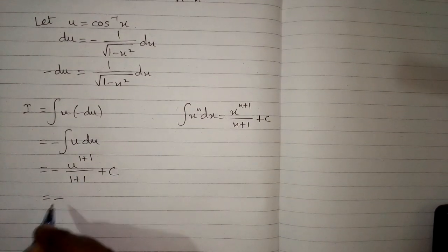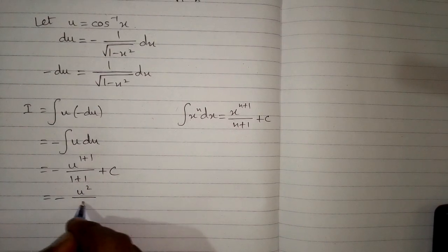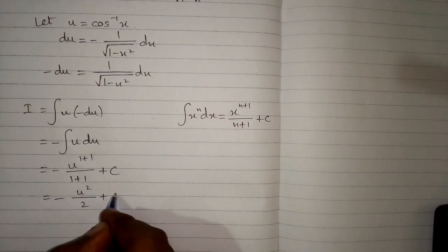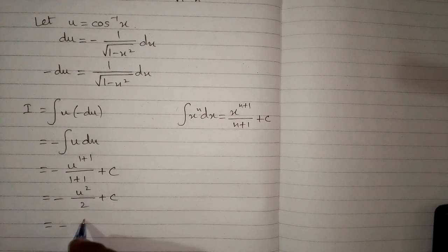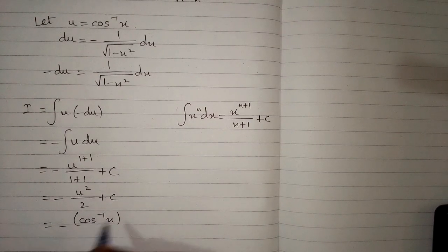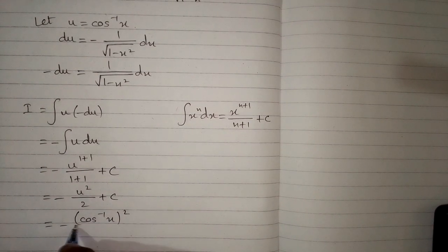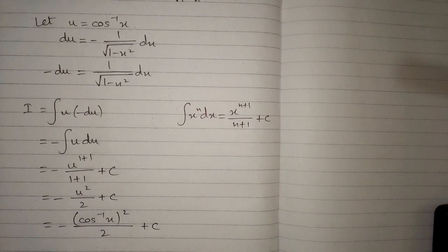Now we have minus u squared upon 2 plus c, and then we substitute back the value of u which is inverse cosine x. So we have minus inverse cosine squared x upon 2 plus c, and this is the required answer.